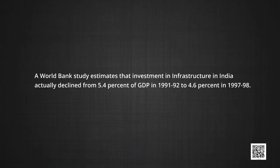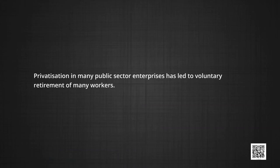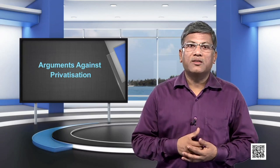A World Bank study estimates that investment in infrastructure in India actually declined from 5.4 percent of GDP in 1991-92 to 4.6 percent in 1997-98. The reduction in involvement of the government could result in the substitution of a public monopoly with a private monopoly, which may further lead to monopolistic exploitation by efficient private owners. State monopoly is definitely preferred to private monopoly. Under privatization there is always fear of retrenchment and consequent unemployment. Privatization in many public sector enterprises has led to voluntary retirement of many workers, which may lead to greater incidence of unemployment and poverty.